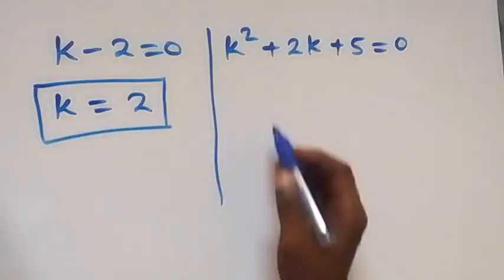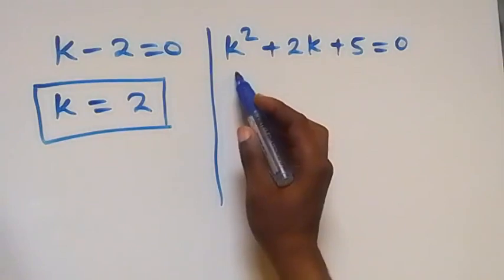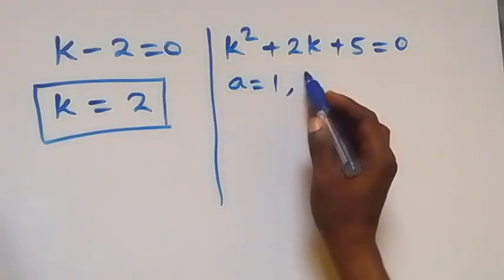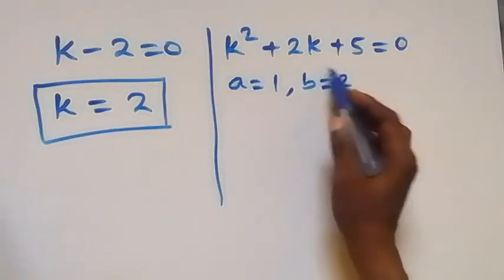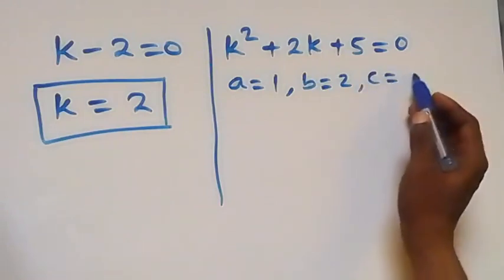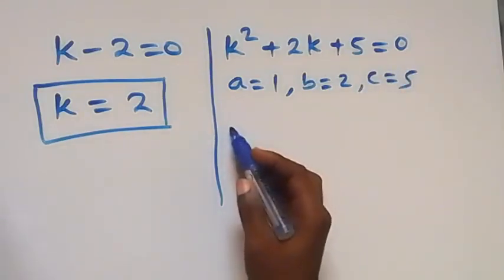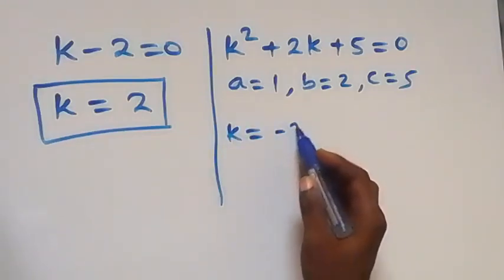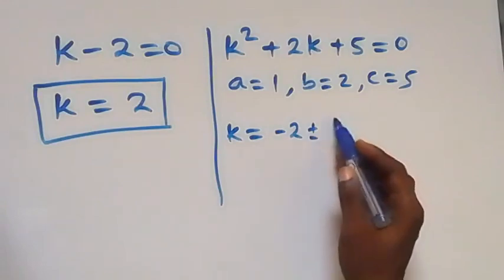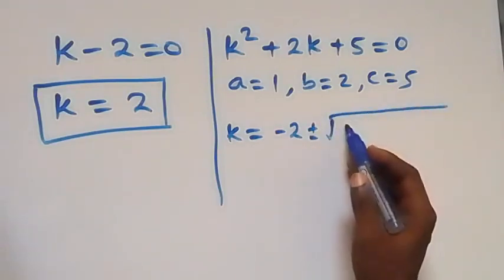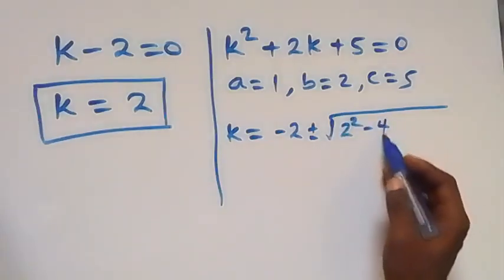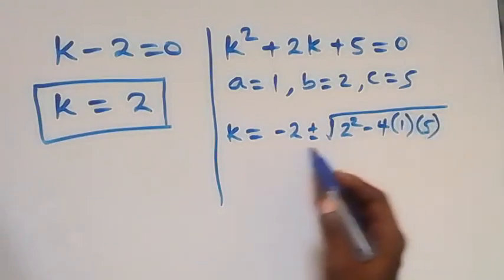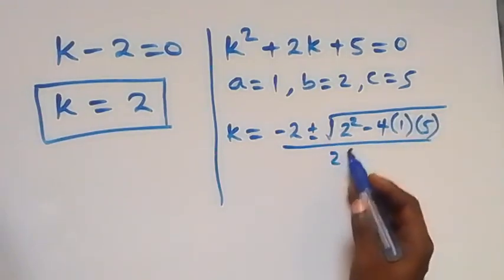We can solve this quadratic equation using the quadratic formula. Here, a is 1, the coefficient of k squared, then b is 2, the coefficient of k, then c is 5. So k equals to minus 2 plus or minus the square root of 2 squared minus 4 times 1 times 5, all over 2 times 1.